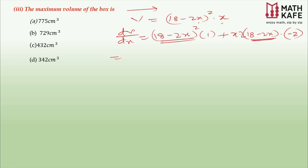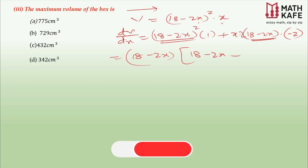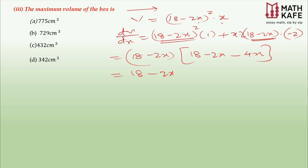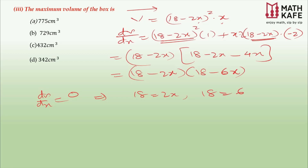There is a common tendency to expand and then differentiate — never do that, as it wastes time. Instead, factor: (18 − 2x) is common, so taking it out gives (18 − 2x) × [(18 − 2x) + x × (−4)] = (18 − 2x)(18 − 6x). Setting dV/dx = 0, we get 18 − 2x = 0 giving x = 9, or 18 − 6x = 0 giving x = 3. We discard x = 9 because the entire sheet would be cut off, leaving no box.